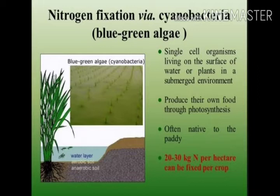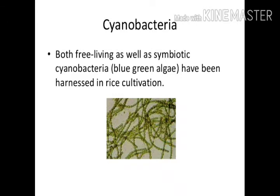Cyanobacteria are native to paddy fields — they are more commonly found in rice fields. They have a nitrogen-fixing capability of 20 to 30 kg per hectare. They may live as free-living organisms or in symbiotic association. The symbiotic association of these bacteria will be covered in the next video. Most frequently, cyanobacteria are available in the rice field because fixing nitrogen content is easier for them there.